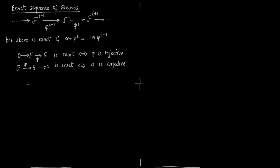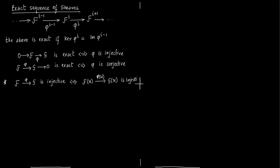We have already defined injective sheaves and surjective sheaves, and we know that the notion of injectivity is subtle. Although you define maps as φ_U from F(U) to G(U), the notion is subtle. Notice that this map φ from F to G is injective if and only if the map φ_U which takes the abelian group F(U) to the abelian group G(U) is injective.